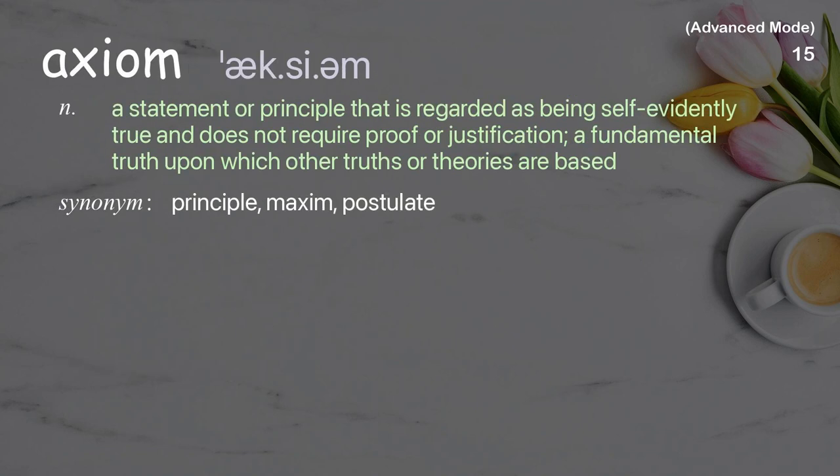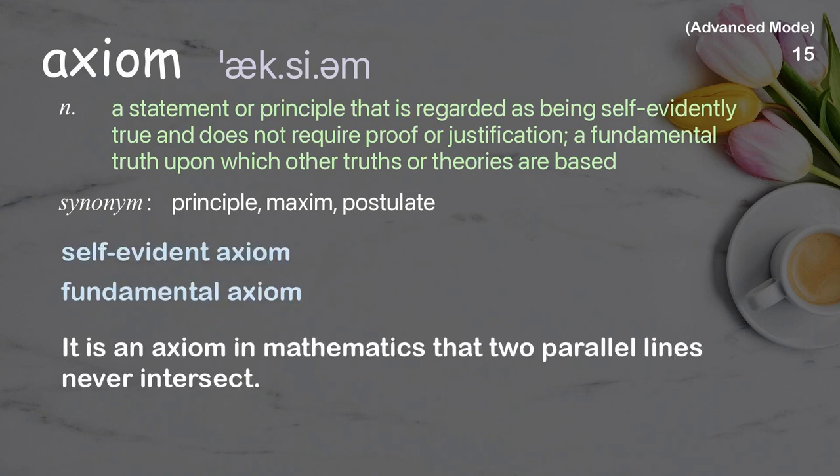Axiom: a statement or principle that is regarded as being self-evidently true and does not require proof or justification; a fundamental truth upon which other truths or theories are based. Examples: self-evident axiom, fundamental axiom. It is an axiom in mathematics that two parallel lines never intersect.